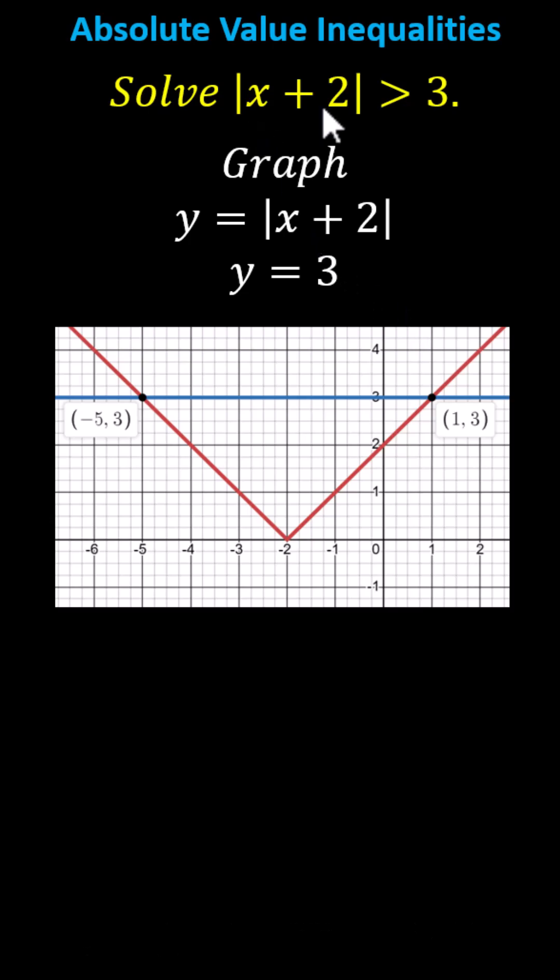Because we have the absolute value of the quantity x plus 2 is greater than 3, and we know the absolute value graph is the v, we're looking for the x values where the v is above the horizontal line y equals 3. We don't include the x values of the points of intersection because the inequality is greater than. We would if it was greater than or equal to 3.